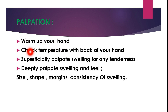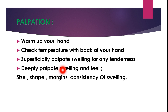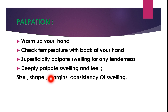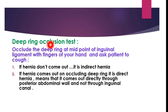The second step in hernia examination is palpation. First, warm up your hands and check the temperature of the lump with the back of your hand. Then superficially palpate the lump for any tenderness while looking at the face of the patient. After superficial palpation, deeply palpate the swelling and feel the size both lengthwise and widthwise, shape — whether globular or rounded — and feel the margin for regular or irregular edges, as well as the consistency, whether soft or hard.